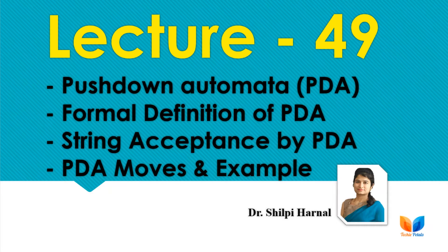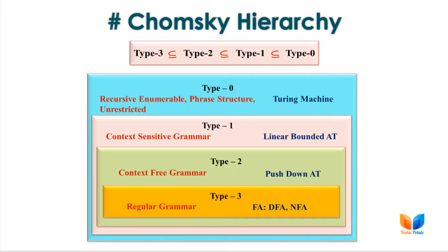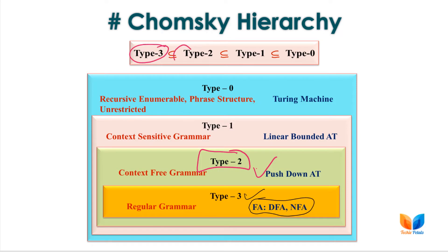Let's start with a brief of Chomsky Hierarchy. As we have done, type 3 languages can be recognized by DFAs and NFAs. Now the topic of concern is type 2 languages, recognized by PDA or Pushdown Automata. Since type 3 is a subset of type 2 languages, PDA can also recognize regular languages. But the reverse is not always true — DFA and NFA cannot recognize all languages that PDA can.